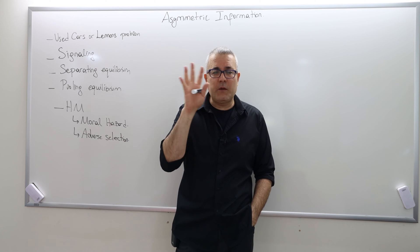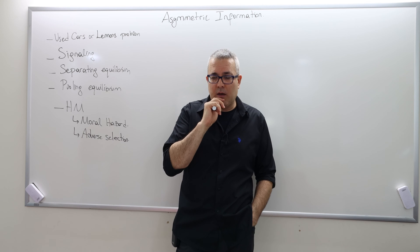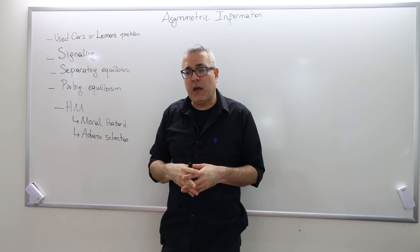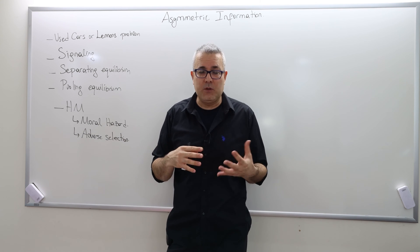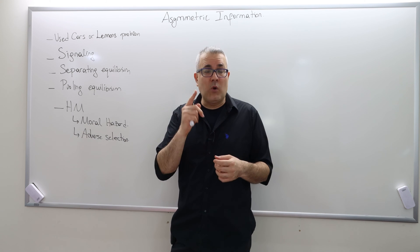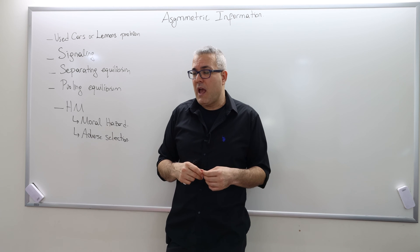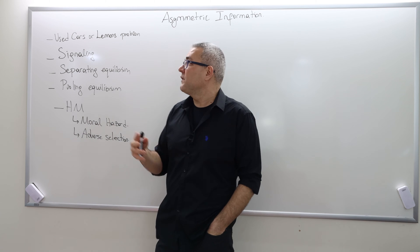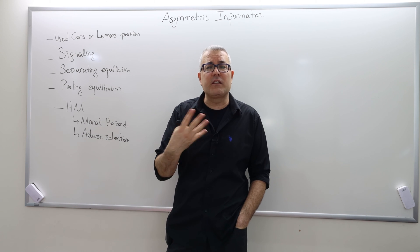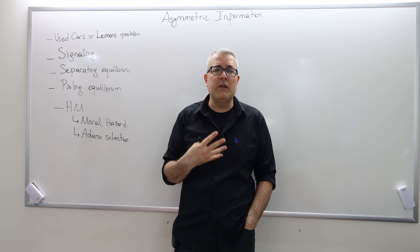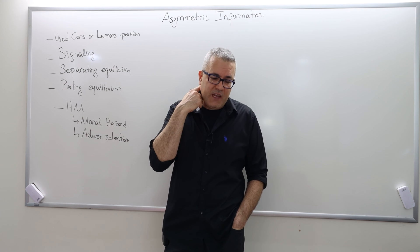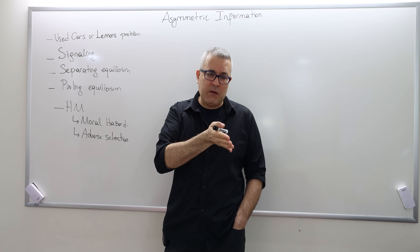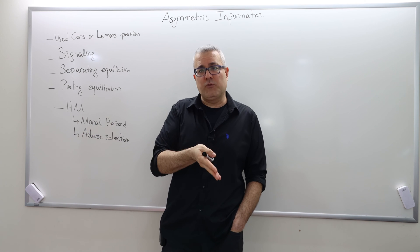We talked about general equilibrium and said the equilibrium outcome will be efficient. But then we started talking about what if things are slightly different — for example, what if there is an externality? Well, that causes inefficiency. And asymmetric information is another source or reason for market inefficiency. So what is asymmetric information? It means the information is not symmetric — some agents know something that the other agents don't.